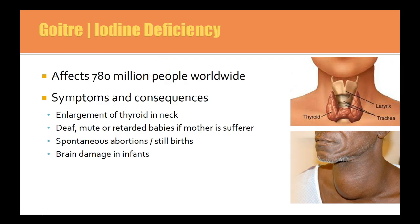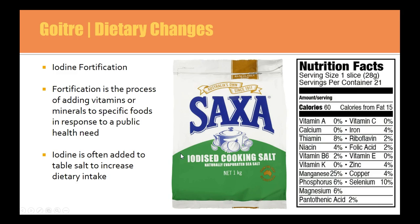Iodine deficiency causes goitre, which we've already discussed. Symptoms include deaf, mute or intellectually impaired babies if the mother is a sufferer, and brain damage in infants. One of the ways to increase iodine is to fortify it in the diet — for example, iodized cooking salt or fortifying bread with iodine or other micronutrients.